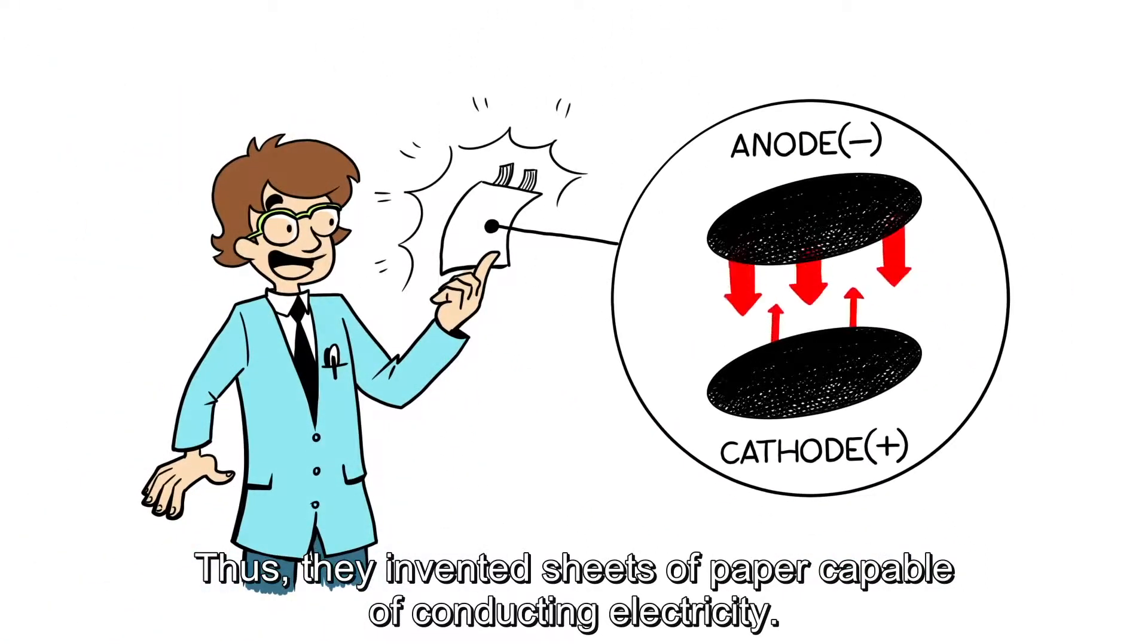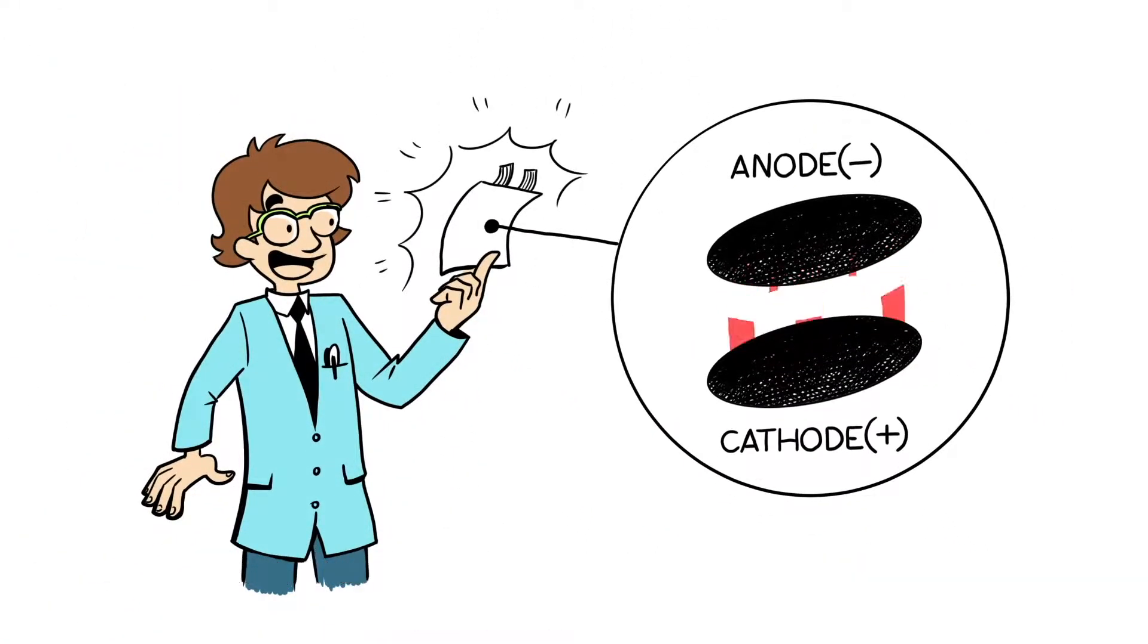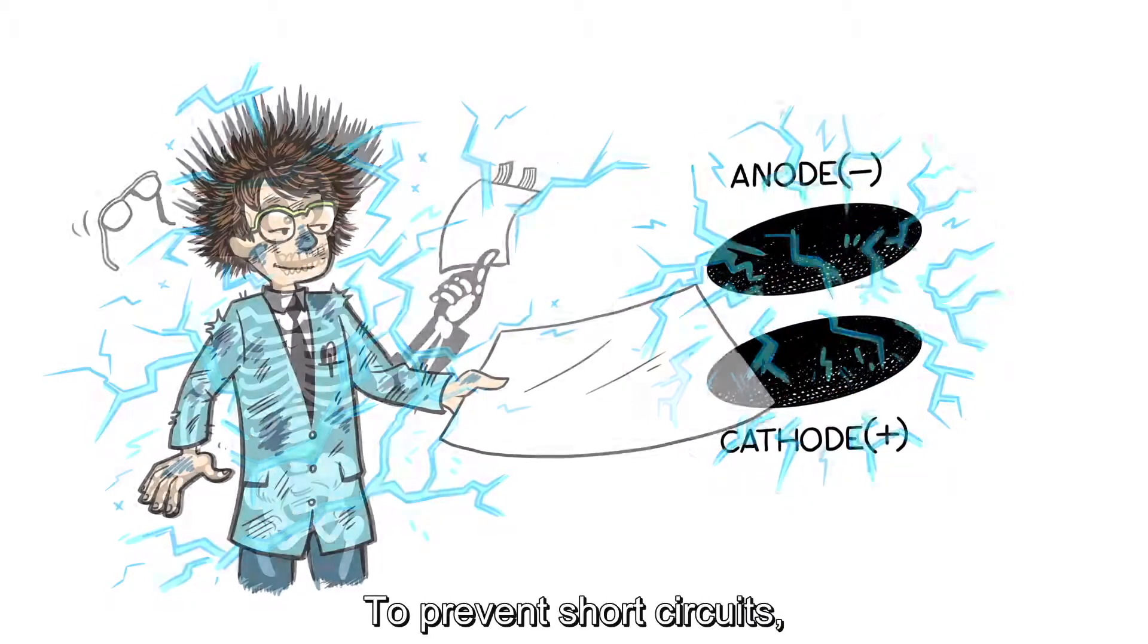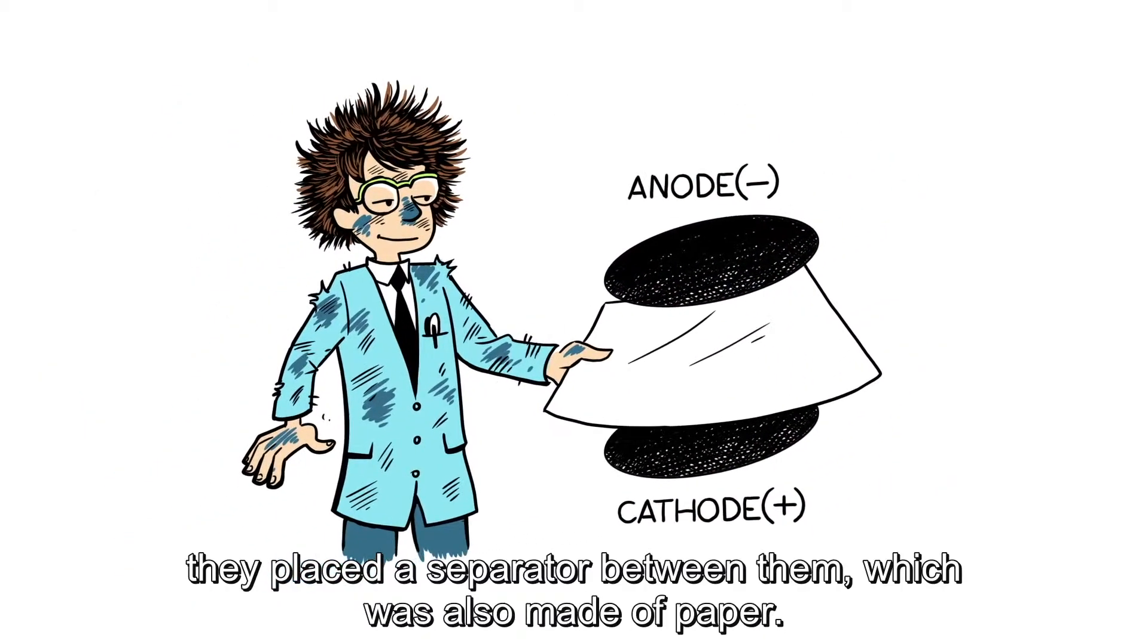Thus, they invented sheets of paper capable of conducting electricity. To prevent short circuits, they placed a separator between them, which was also made of paper.